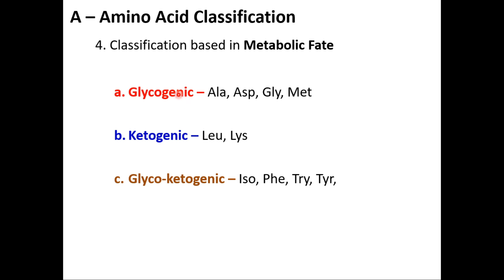Glycogenic amino acids are those that can form glucose. These include alanine, aspartate, lysine, and methionine — abbreviated as AAGM (Triple A, G, M). These are our glycogenic amino acids. Ketogenic amino acids are very frequently asked in questions and MCQs — 'name amino acids which are ketogenic in nature' or 'select the group of amino acids which are ketogenic.'